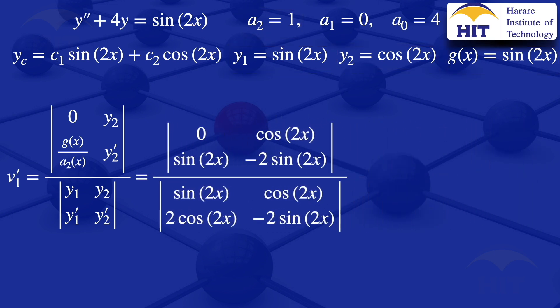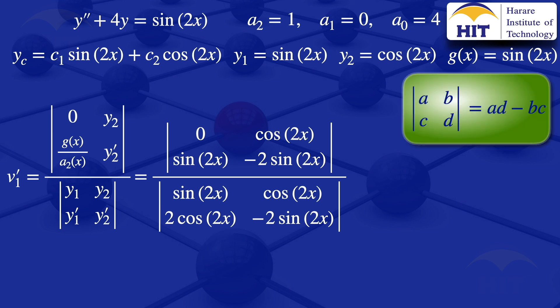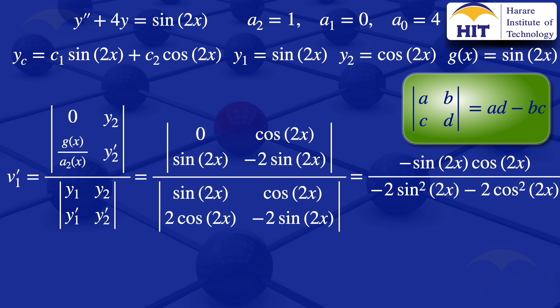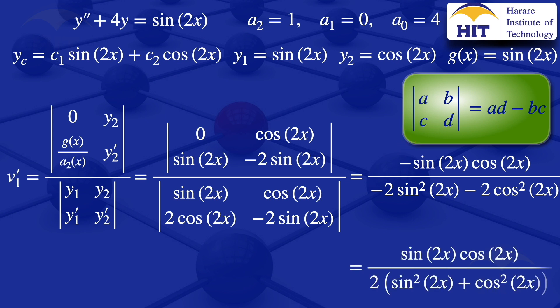We now evaluate those 2×2 determinants using the formula ad - bc. The numerator gives -sin(2x)·cos(2x). The denominator gives -2sin²(2x) - 2cos²(2x). In the denominator, we factor out -2, and it cancels with the negative in the numerator. Our expression becomes sin(2x)·cos(2x) divided by 2·(sin²(2x) + cos²(2x)).